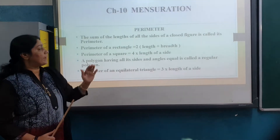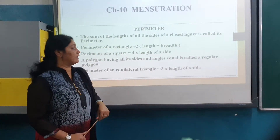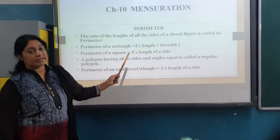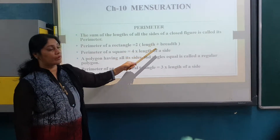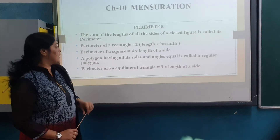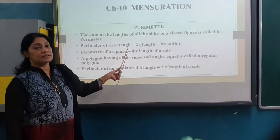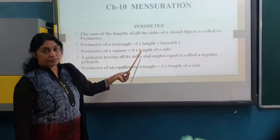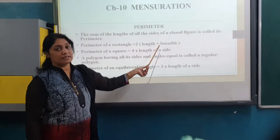Now, perimeter of a rectangle. So here is the formula. With the help of this formula we have to do all the sums. Perimeter of a rectangle is 2 into bracket length plus breadth.